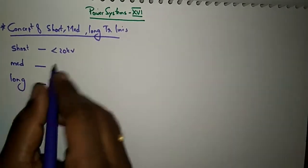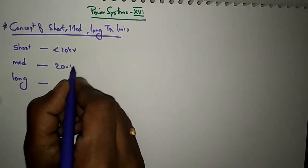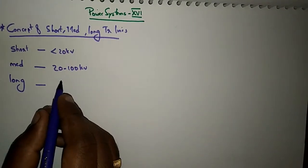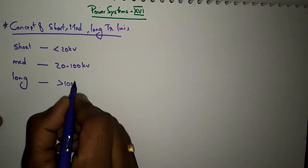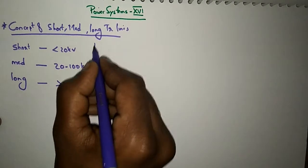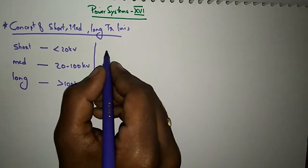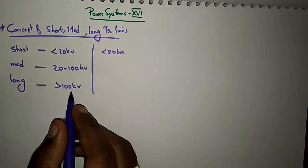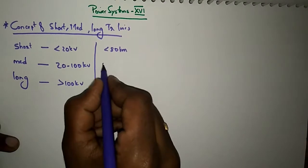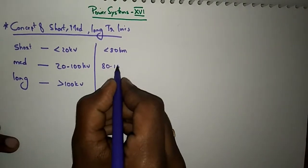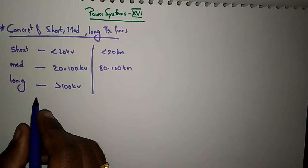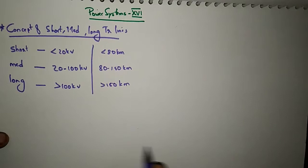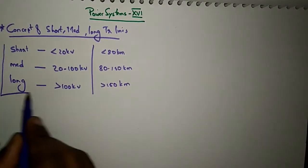If the operating voltage is less than 20 kV, it is a short transmission line. If the transmission voltage is between 20 to 100 kV, it is a medium transmission line. If it is greater than 100 kV, we call it a long transmission line. Similarly, distance thresholds also apply in classifying transmission lines.